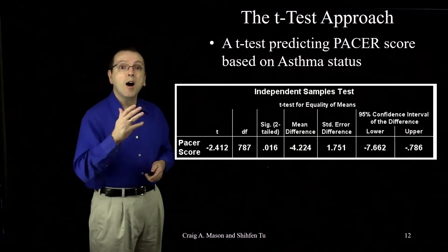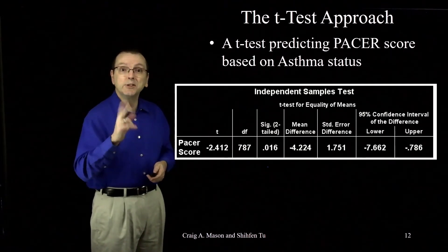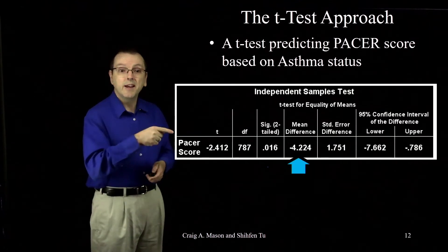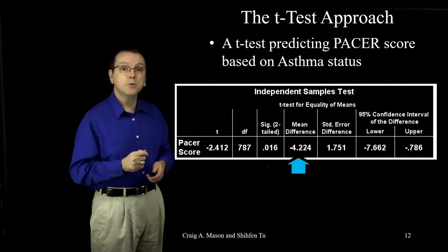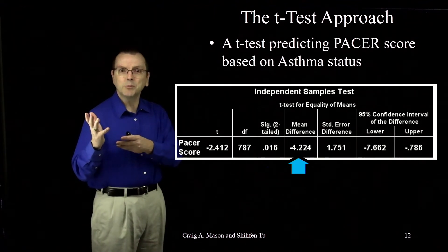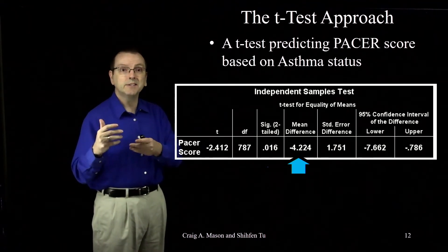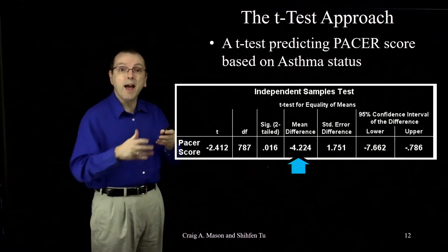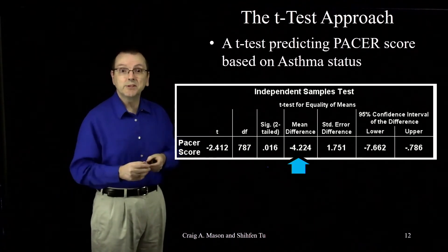Now notice the output also tells us that the difference between the two means was negative 4.224. That's the mean of the kids with asthma, 25.804 minus the mean for the kids without asthma, 30.028.